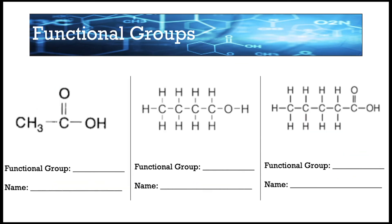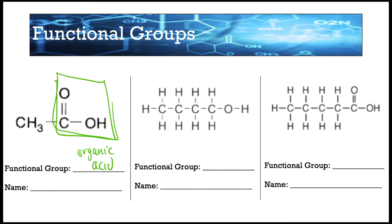Next is an organic acid, characterized by the C double bond O and OH group. When naming it, name the carbon chain: two carbons is eth-, single bond gives -an-, and the ending for organic acids is -oic acid. So the name is ethanoic acid.